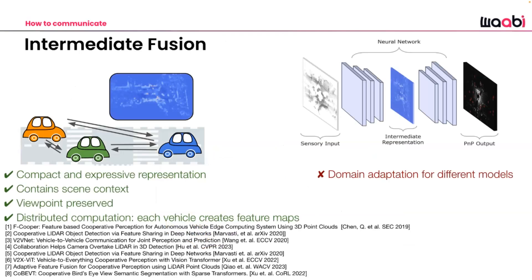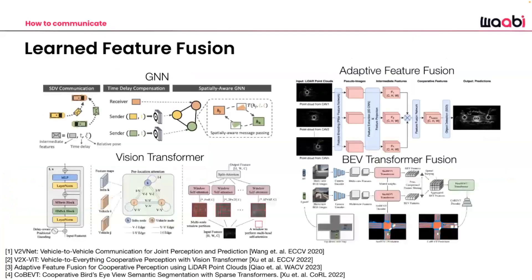The approach that has attracted the most community interest is intermediate fusion, which has more learning and data-driven aspects. Here you send intermediate outputs of your perception and prediction stack — such as bird's-eye-view voxel features, point cloud features, or image features — distributing computation across vehicles or infrastructure in the network and sharing compact, data-driven messages about the most important information. The downside is that nodes with different perception modules require domain adaptation to combine features into a unified representation for planning.